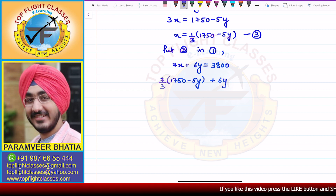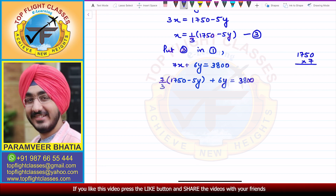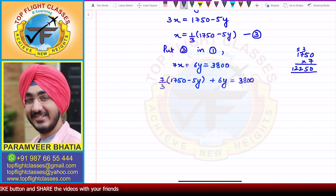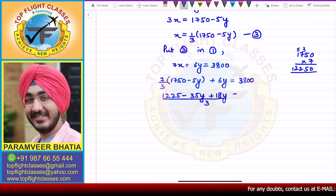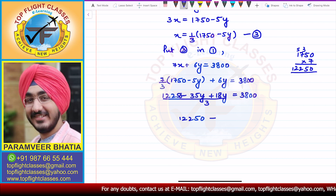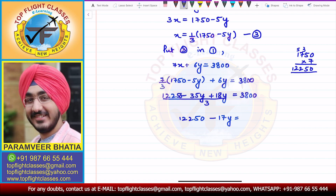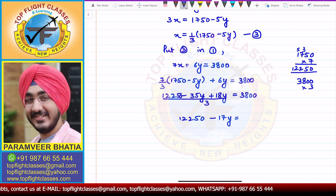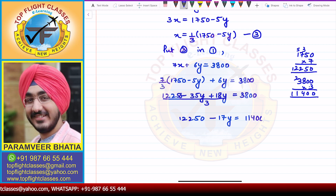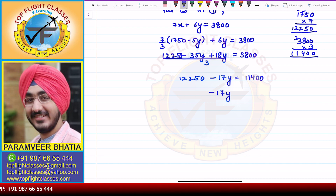Substituting x into the first equation, 7x + 6y = 3800, I get (7/3)(1750 − 5y) + 6y = 3800. Multiplying out: 12250/3 − 35y/3 + 6y = 3800. Combining the y terms gives (−35y + 18y)/3, so 12250 − 17y divided by 3 equals 3800. Multiplying both sides by 3: 12250 − 17y = 11400.